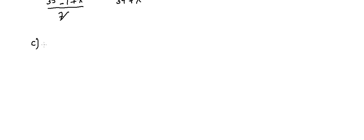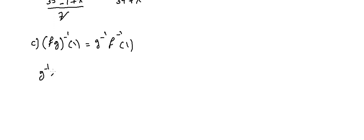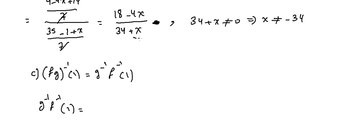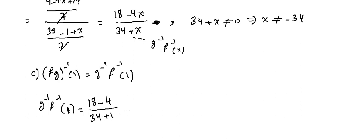Part c asks us to verify that f∘g⁻¹(1) equals g⁻¹∘f⁻¹(1). Let's find g⁻¹(f⁻¹(1)) using the result we just found: (18 minus 4x) over (34 plus x). Substituting x = 1: (18 minus 4) over (34 plus 1) = 14 over 35. That completes the right-hand side verification.